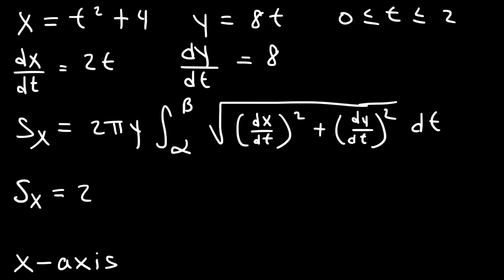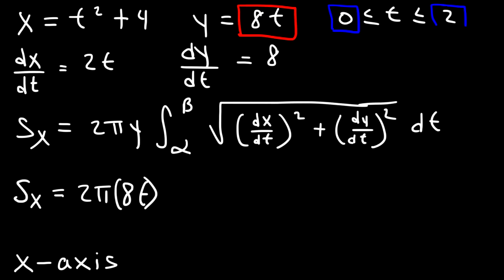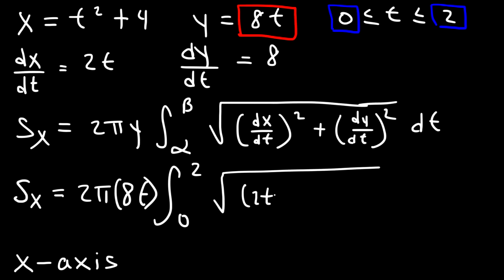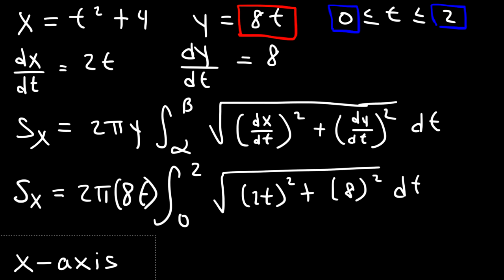In this case, y is equal to 8t. Alpha is 0 and beta is 2, so we're going to integrate from 0 to 2. dx/dt is 2t and dy/dt is 8.